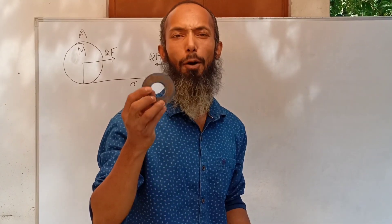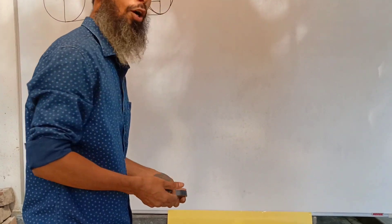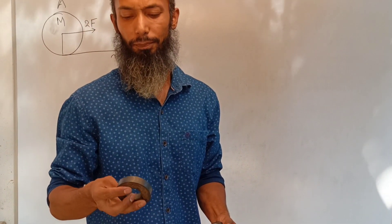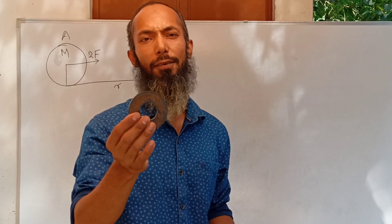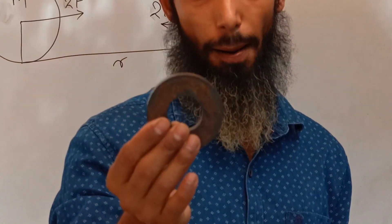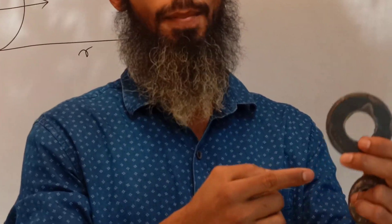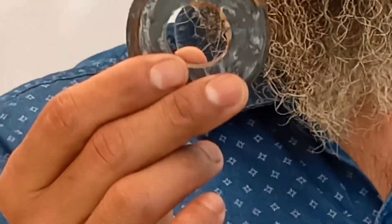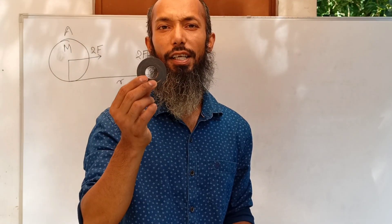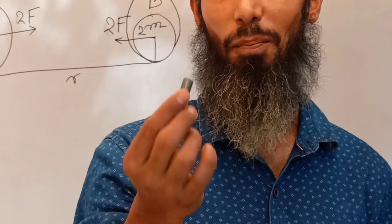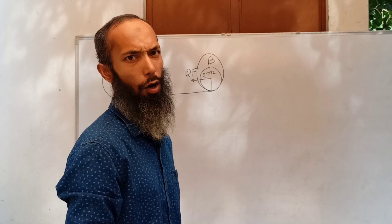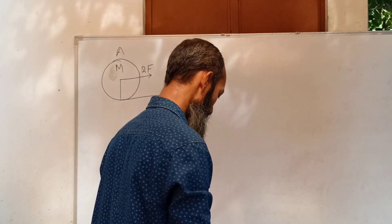I have already measured the mass of each of the magnets. This magnet has a mass of 224 grams. This magnet has a mass of 222 grams — almost the same. This small magnet has a mass of 93 grams. And this magnet has a mass of 12 grams. Now let us see how the force depends on the mass.